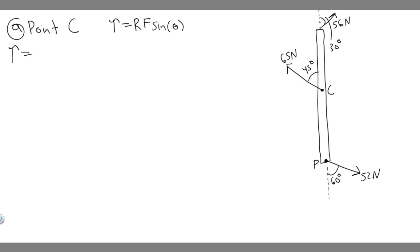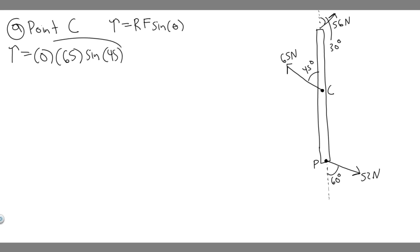What is going to be the radius at point C? The radius from the center is just zero, so the torque here is just going to be zero, because there's no distance from where the force is being applied to the center. So it's zero times the force, which is 65, times the sine of 45 degrees. There's no torque here because the radius is zero.